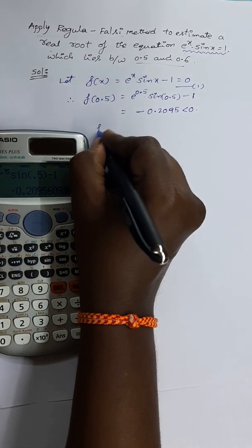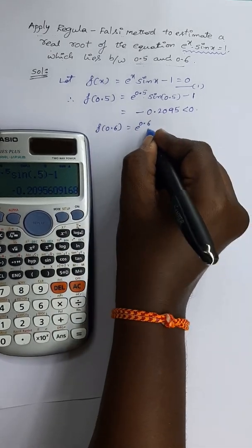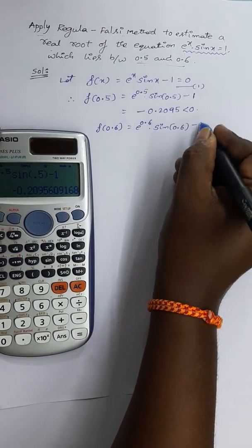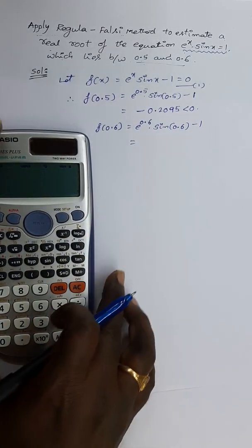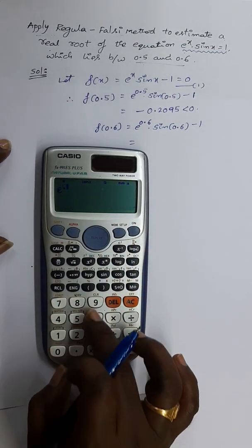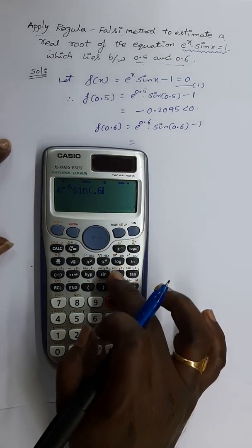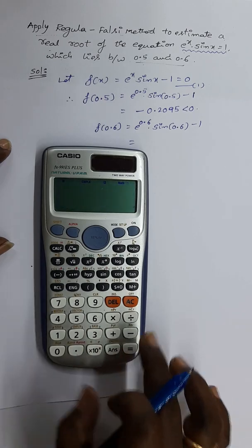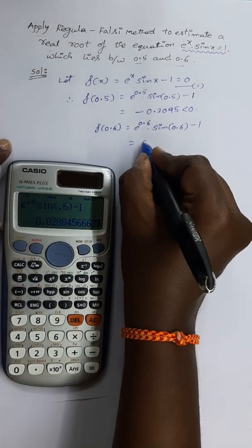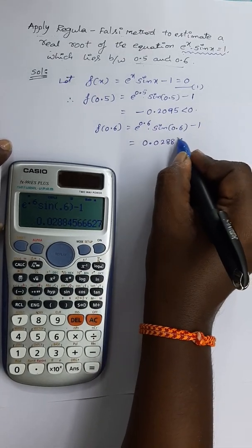Now calculate f(0.6), which is e^0.6 · sin(0.6) − 1. Again, use the scientific calculator: press Shift + ln for e^x, then 0.6 · sin(0.6) − 1. You will get the function value at 0.6, which is 0.0288, which is positive.